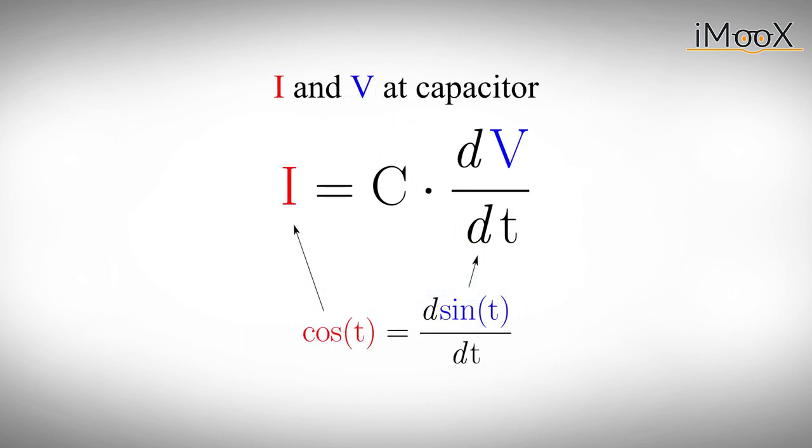A good mathematician will immediately see that the phase shift between voltage and current comes from the derivative. If we plug in a sine-shaped voltage v into this equation, the current will always be cosine, hence minus 90 degree phase shifted.